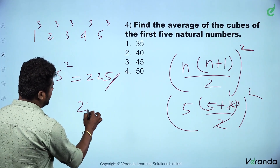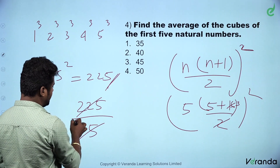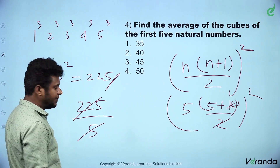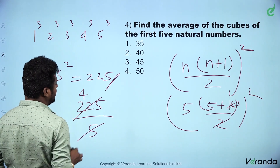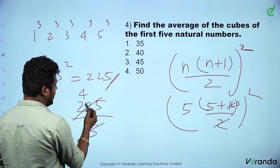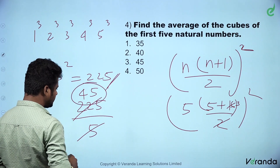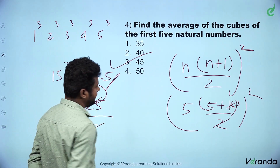225 is the square number. We use average: number of terms is 5. 225 divided by 5 gives 45. So the answer is Option C, 45.